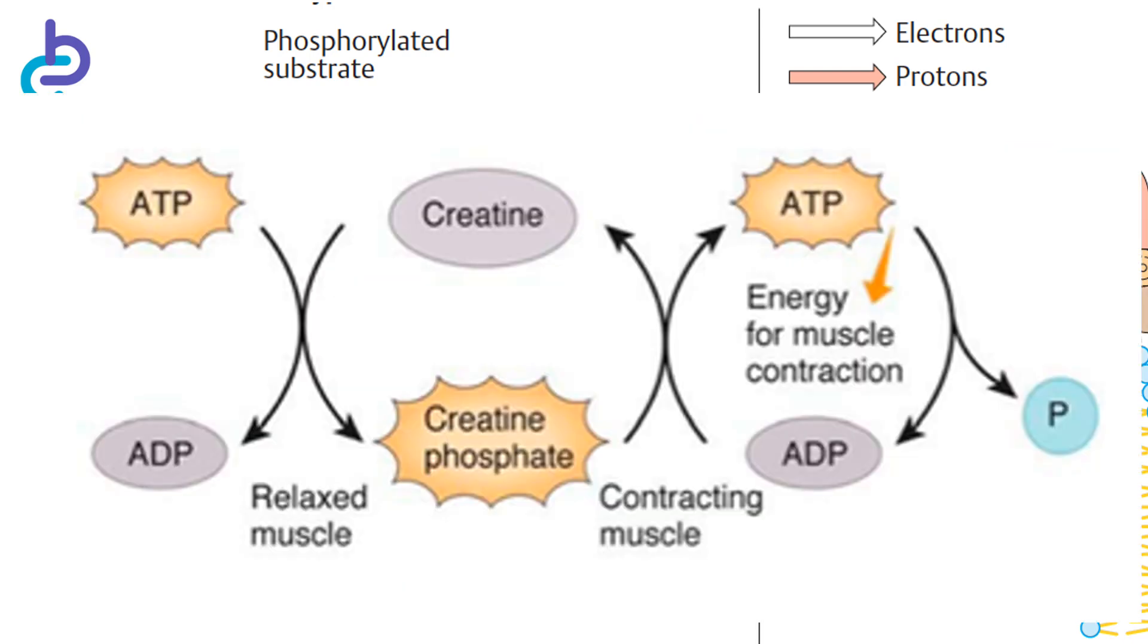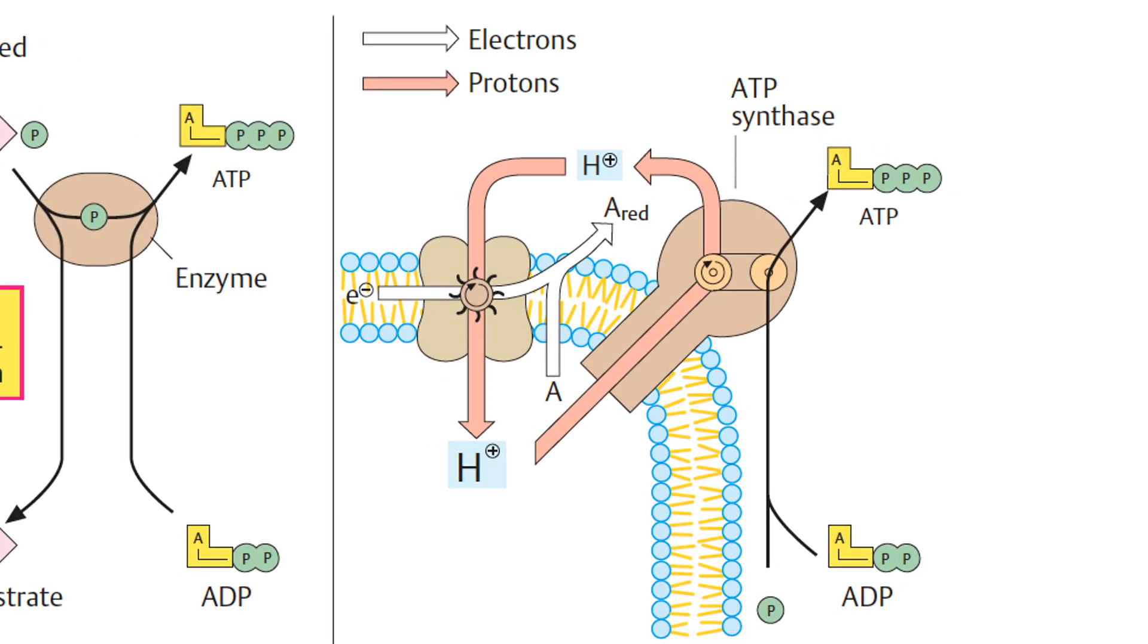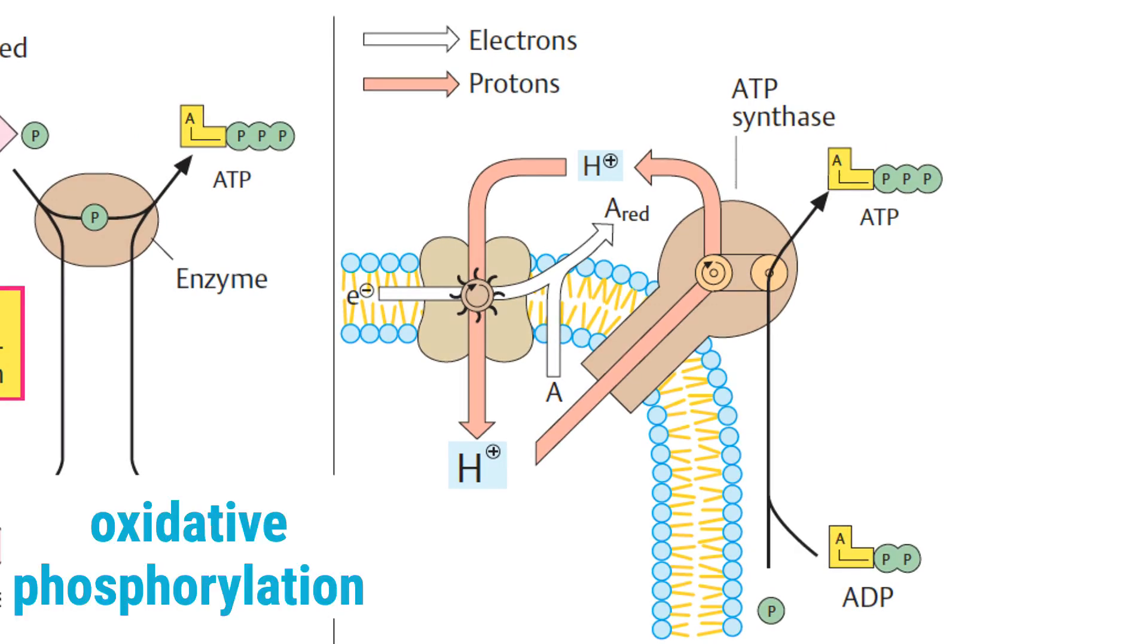Another energy-rich phosphate compound is creatine phosphate, which is formed from ATP in muscle and can regenerate ATP as needed. Most cellular ATP does not arise in this way by transfer of phosphate residues from organic molecules to ADP, but rather by oxidative phosphorylation.